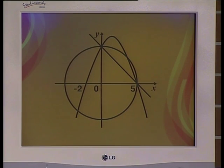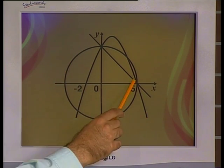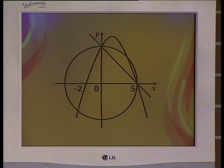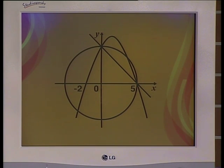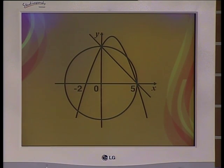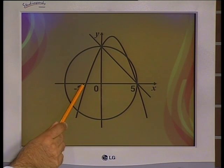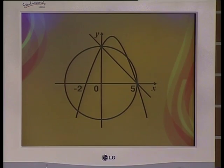On the monitor we have three graphs: an upside-down parabola, a straight line, and a circle. We see that all three graphs share one x-intercept at x equals 5. The other x-intercept of the parabola is at x equals negative 2. This is all the explicit information that we have.